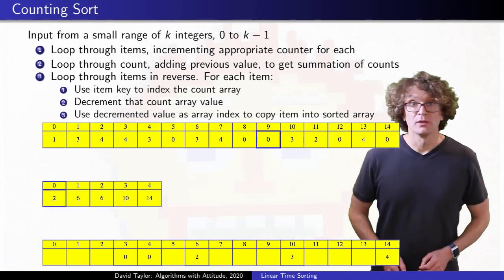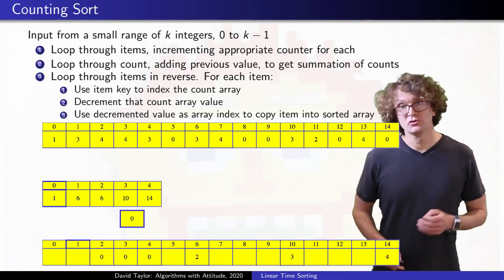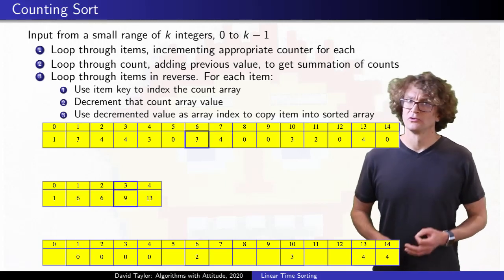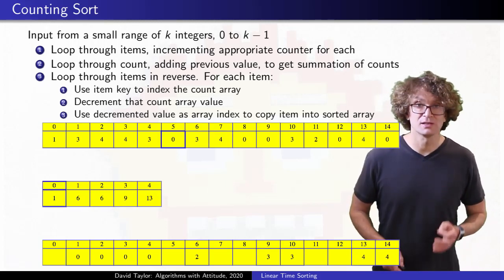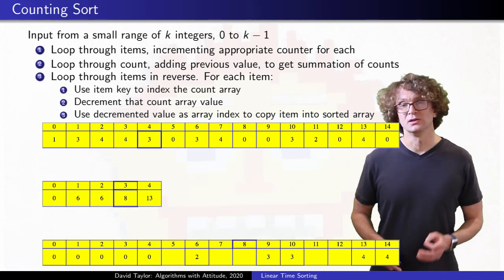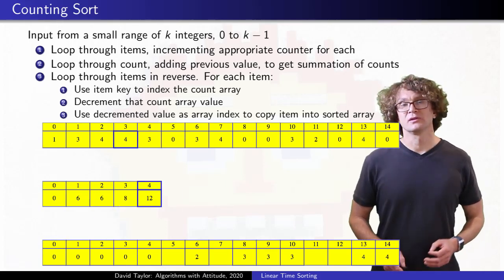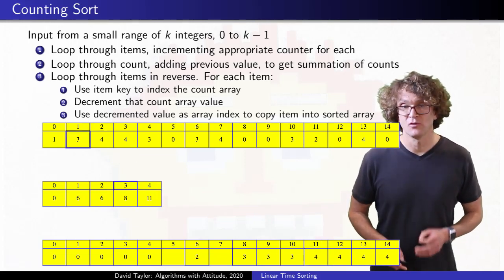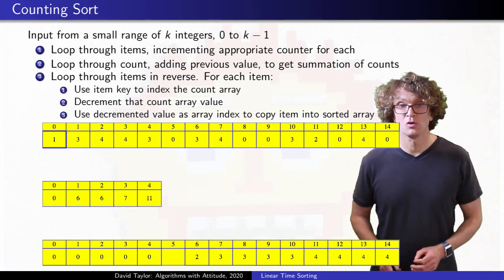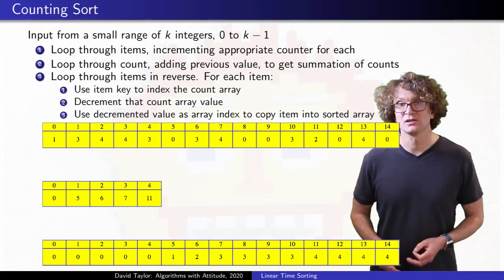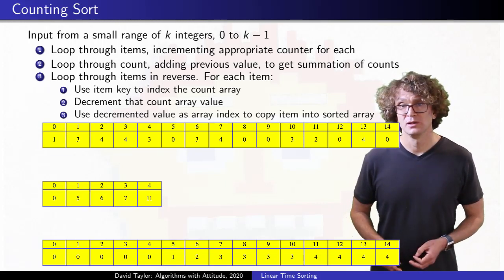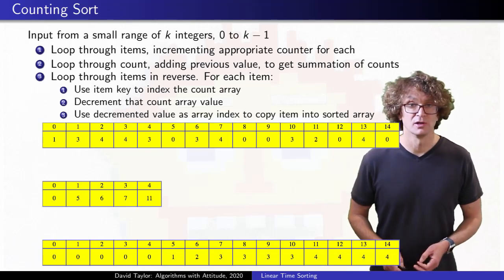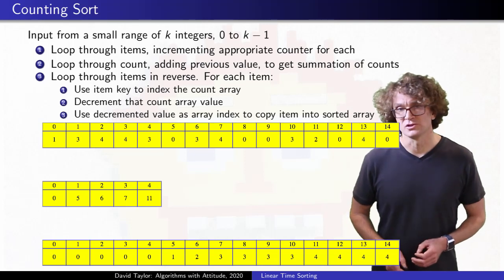We continue on through all the original objects, looking up their keys, using that key to look up and decrement the counter array, which now stores an index, and using it to give a position to copy the object into the sorted array. Everything slots in there nicely, and when we finish, now that the counters have all been decremented, they hold the first index of each key type. The first 0 key object is in index 0, the first 3 key object is in index 7.